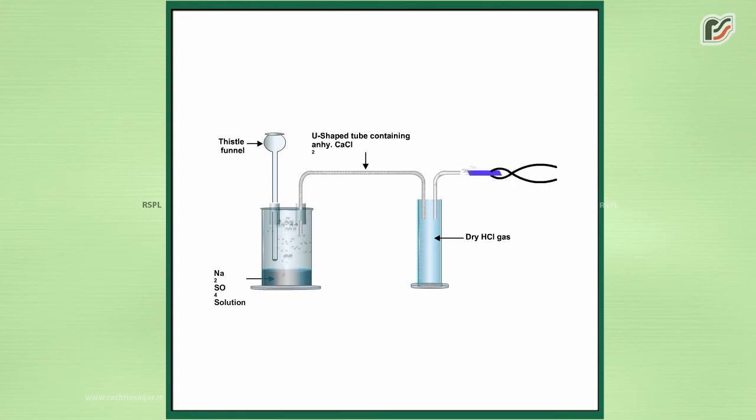Test it with moist blue litmus paper. Add benzene into this jar to dissolve the HCl gas. Test it with dry blue litmus paper.